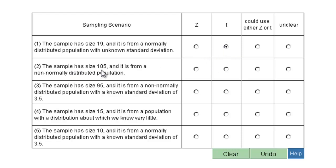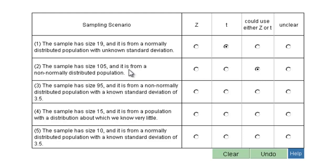The sample size is 105, from a non-normally distributed population. They're not telling me the standard deviation is known, and they're not telling me it's unknown. You can get away with either Z or T. I would say Z, but this is the one they're finicky about — they would say you can use Z or T, because they don't tell you anything about the standard deviation.